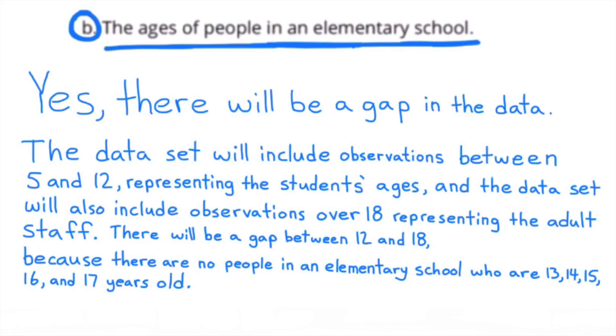Yes, there will be a gap in the data. The data set will include observations between 5 and 12, representing the students' ages, and the data set will also include observations over 18, representing the adult staff. There will be a gap between 12 and 18, because there are no people in an elementary school who are 13, 14, 15, 16, and 17 years old.